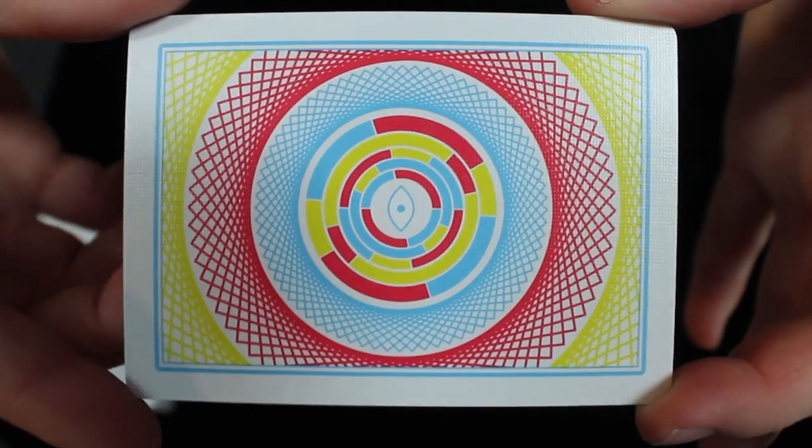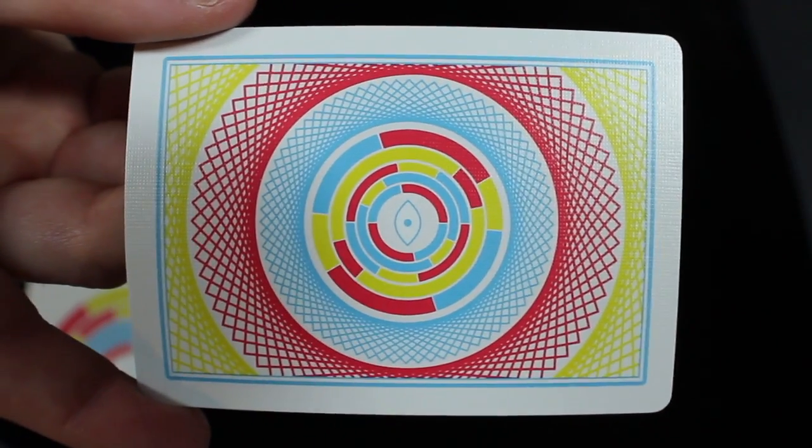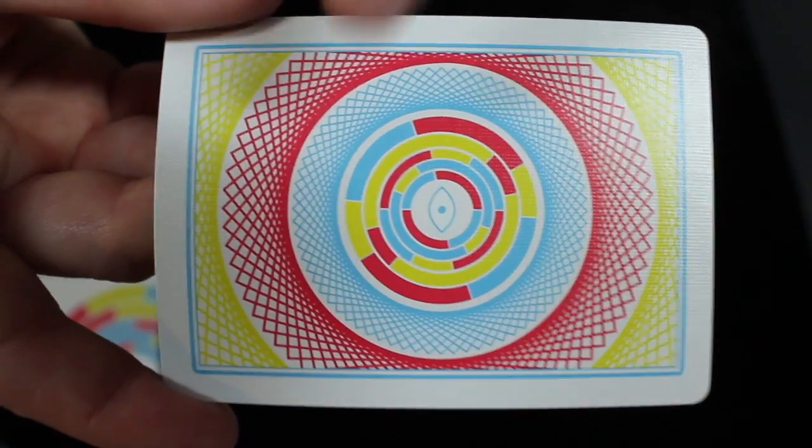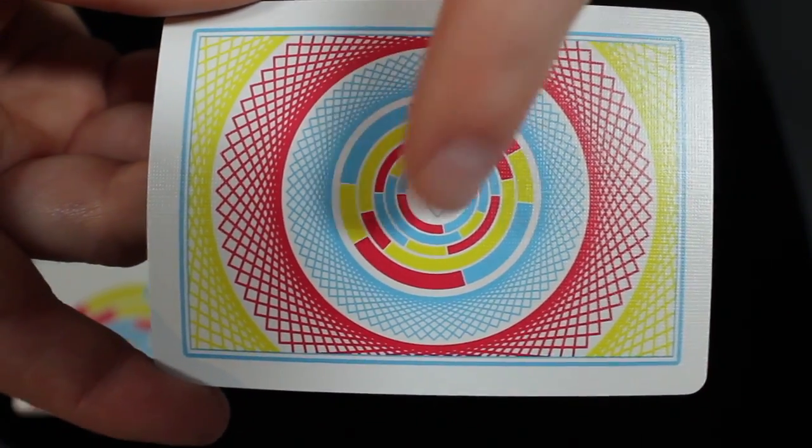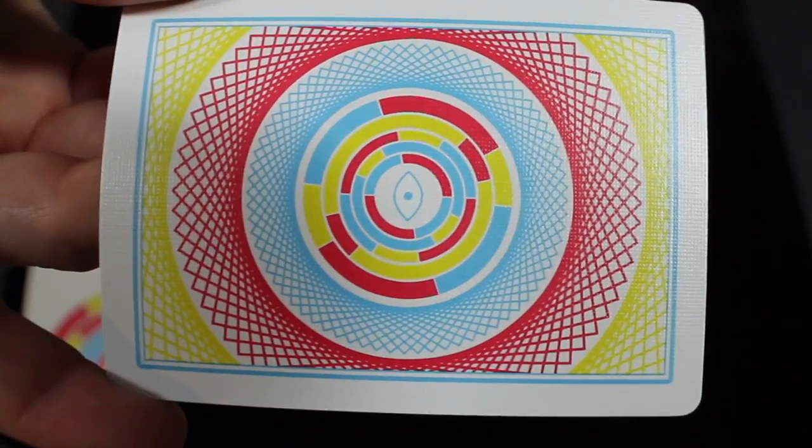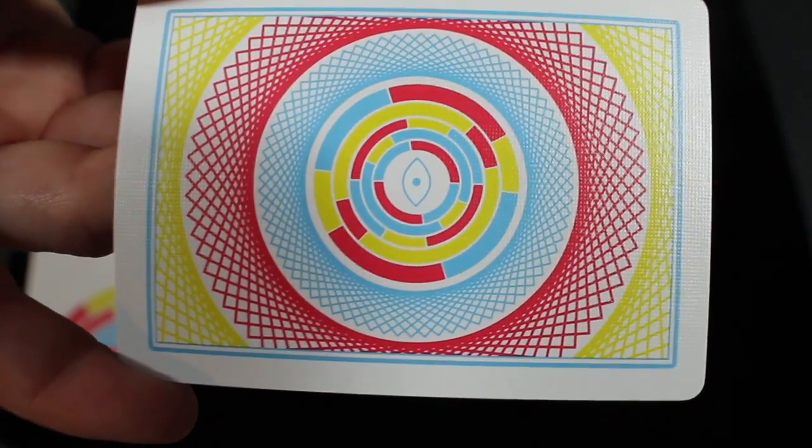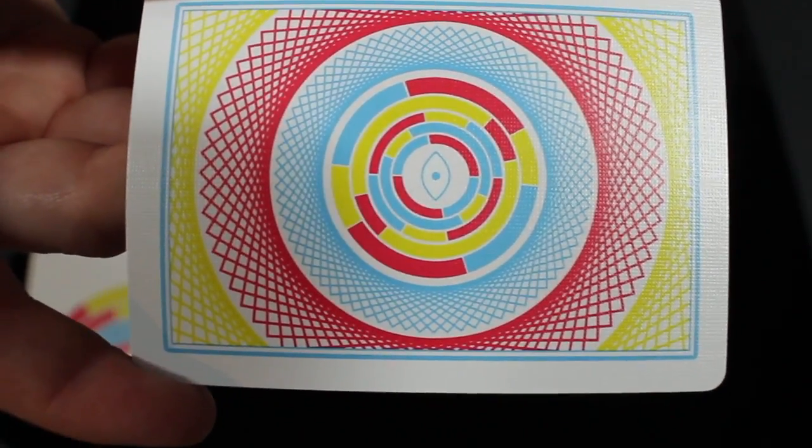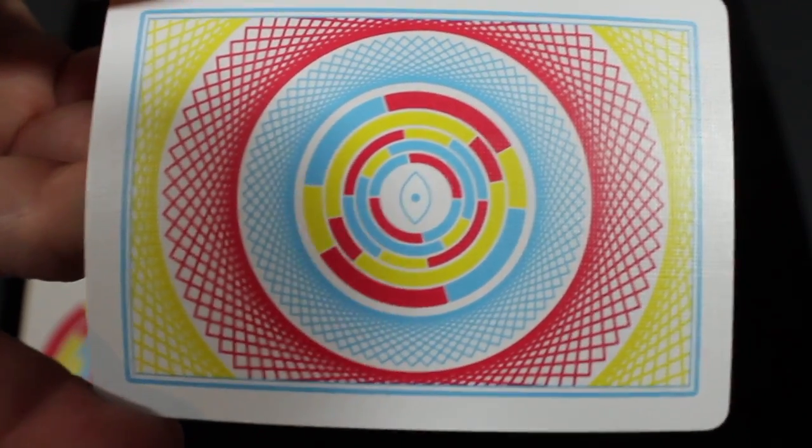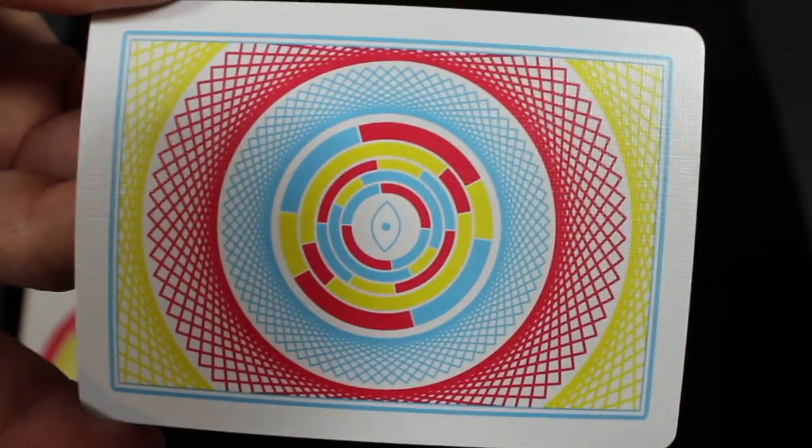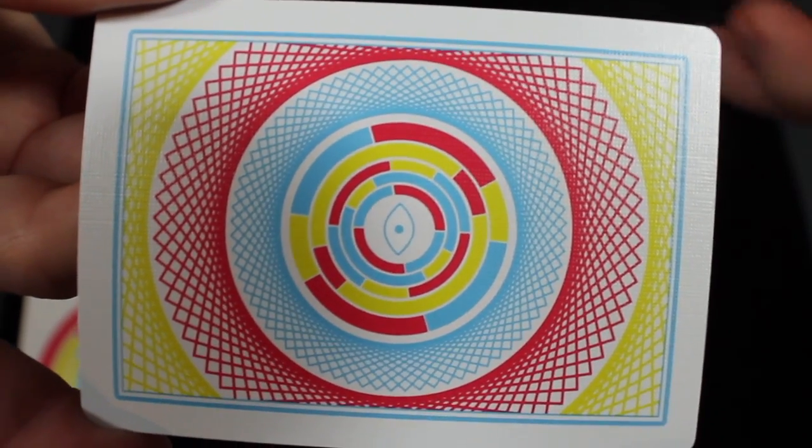Taking a look at the back design itself, as I said before you can see all those intricate colors with that kind of mosaic in the middle that you see on the front of the tuck case, with that all-seeing eye in the middle. When spun these colors just kind of all blur together, bringing your eye to that middle eye, no pun intended, in the center of the card. It has a nice blue border around it and a nice thick border around the card itself.